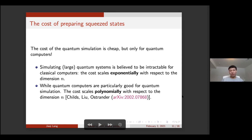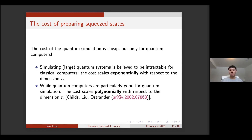Another issue is what's the cost for preparing such a state. The short answer is that the cost for quantum simulation is cheap on a quantum computer, but not for a classical computer. Simulating large quantum systems is very difficult classically because the cost scales exponentially with dimension n — for n at millions or billions, the cost is just hopeless. But if we have a quantum computer, it is particularly good for simulating quantum systems, and the cost only scales polynomially with n. This result is by Childs, Liu, and Ostrander.